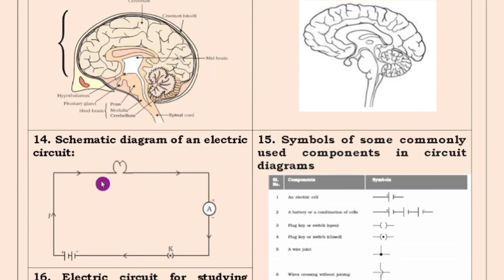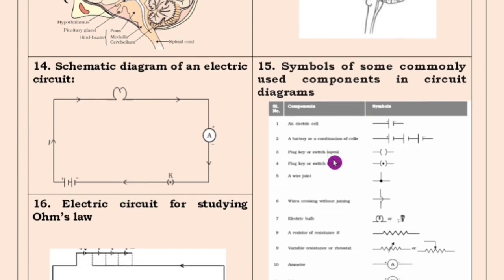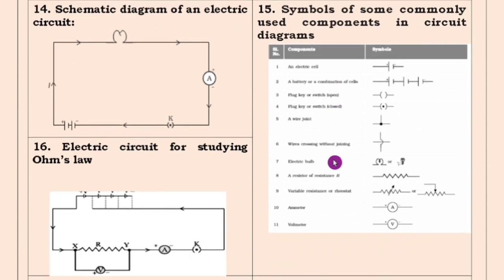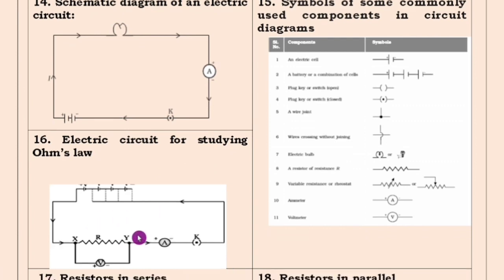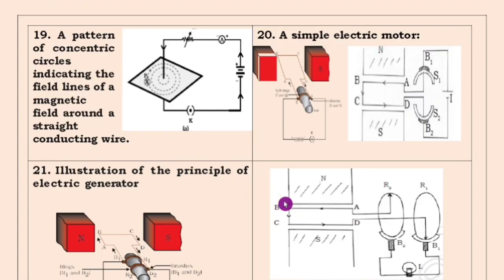The first one in the electricity chapter is the electric circuit diagram, which you have to learn. Then the symbols of some common components in circuit diagrams — you have to learn these component symbols. The next one is electric circuit for studying Ohm's law — this you also have to practice. Next are resistors in series and resistors in parallel. These two schematic circuit diagrams are very, very important. If they ask a problem, they won't ask a diagram, and if they ask a diagram, they won't ask a problem. So you have to learn and practice both thoroughly.